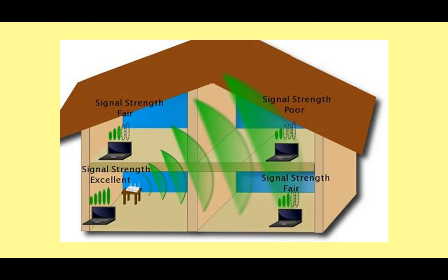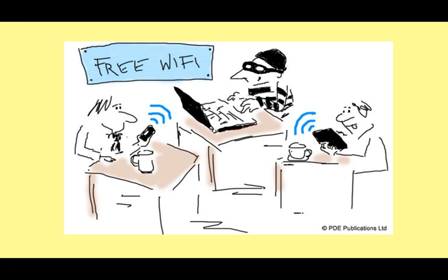Here we can see a common problem we're all familiar with. If your laptop is close to the router downstairs you get a really good signal and good upload and download speeds. As you move around the house the signal strength gets less and less, it becomes more patchy — it can depend on what's in the walls and the distance. Sometimes we need to install boosters or other technology to get good reception everywhere.